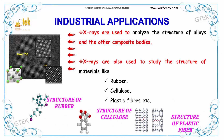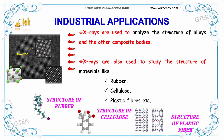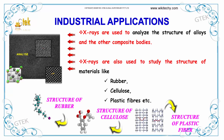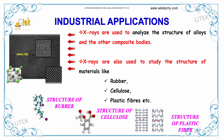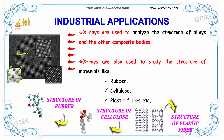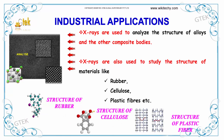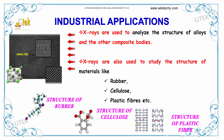X-rays are used to analyze the structure of alloys and other composite bodies. You can see the structure of alloys upon further zooming. X-rays are also used to study the structure of materials like rubber, cellulose, and plastic fibers.